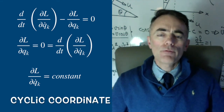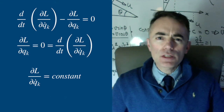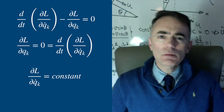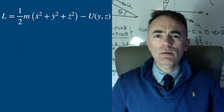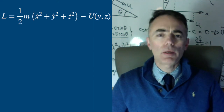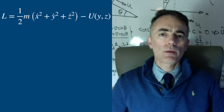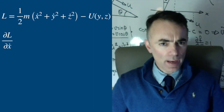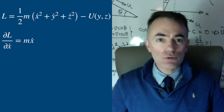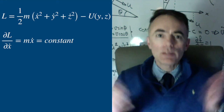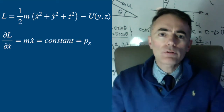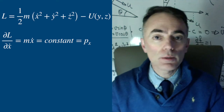For example, think of a system where the Lagrangian can be written in Cartesian coordinates and does not depend on x. Then the partial of L with respect to x dot, which is mx dot, is conserved. But this is the linear momentum — we have conservation of the linear momentum.